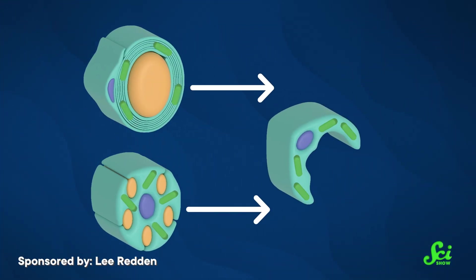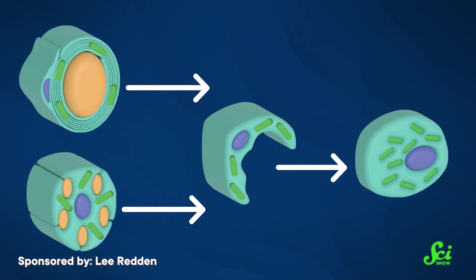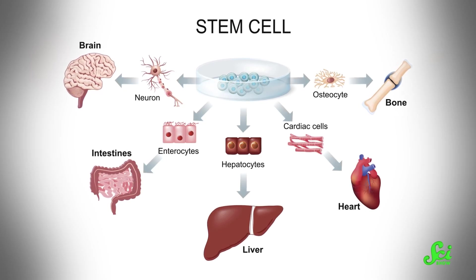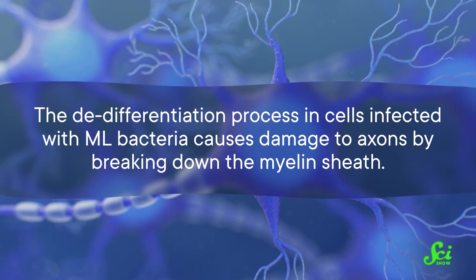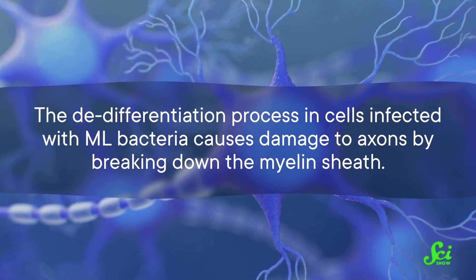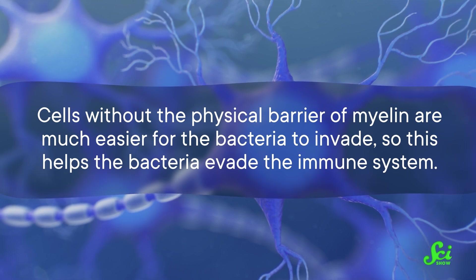When a person contracts Hansen's disease, the ML bacteria use this system to their benefit. ML bacteria reprogram Schwann cells not just into an immature, de-differentiated state, but even further into something resembling a stem cell. Stem cells can differentiate into lots of different types of cells, but that's sort of all that they do. A Schwann cell that's de-differentiated this far isn't good at being a Schwann cell anymore. This de-differentiation process in cells infected with ML bacteria causes damage to axons by breaking down the myelin sheath. Cells without the physical barrier of myelin are much easier for the bacteria to invade, so this helps the bacteria evade the immune system.